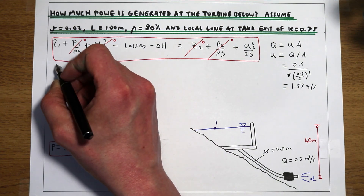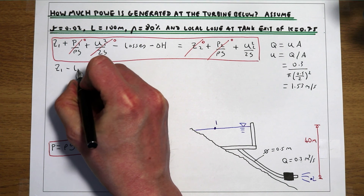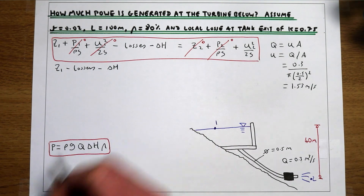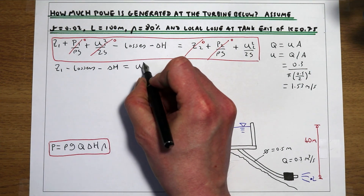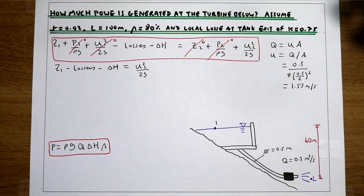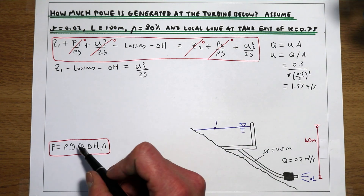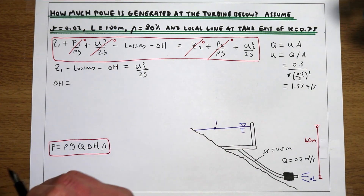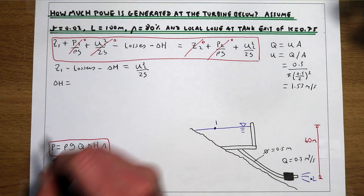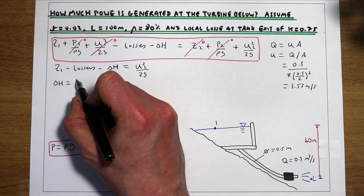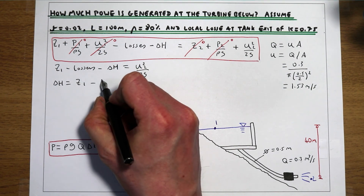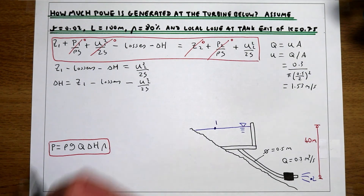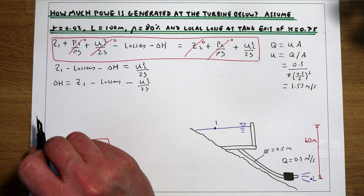This gives us: elevation at point 1, minus our losses, minus the energy the turbine is extracting from the flow, equals our velocity head at point 2. To work out the power the turbine is generating, we rearrange the equation for delta H: delta H equals the elevation at 1, minus losses, minus our velocity head at 2.